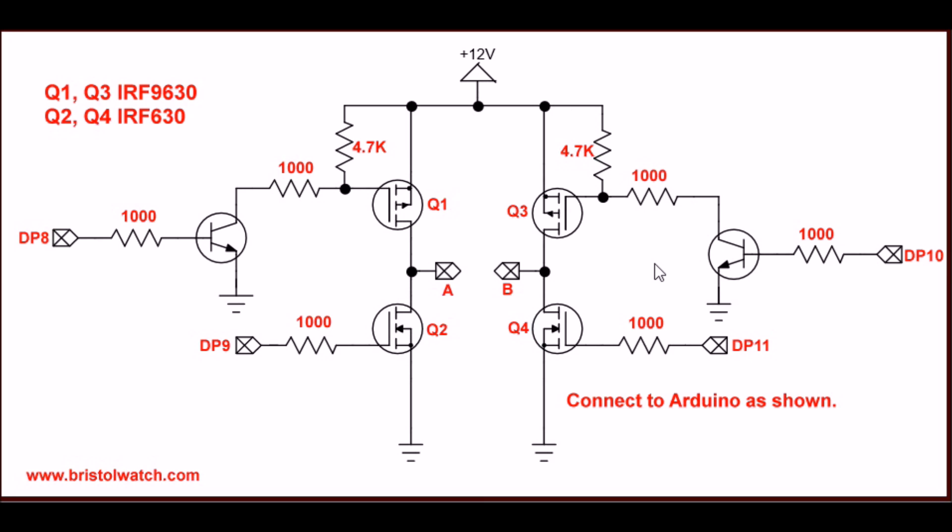Never, ever, ever cut on Q3 and Q4 at the same time. If you're using the current limiting circuit, you won't blow anything up. But if you're not using it and you do that, that's all she wrote. Same thing here: never cut on Q1 and Q2 at the same time.